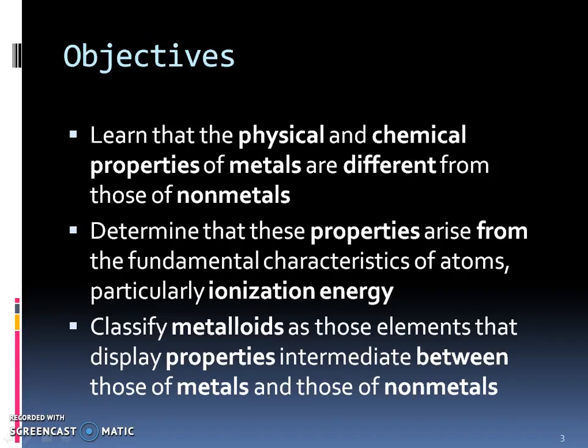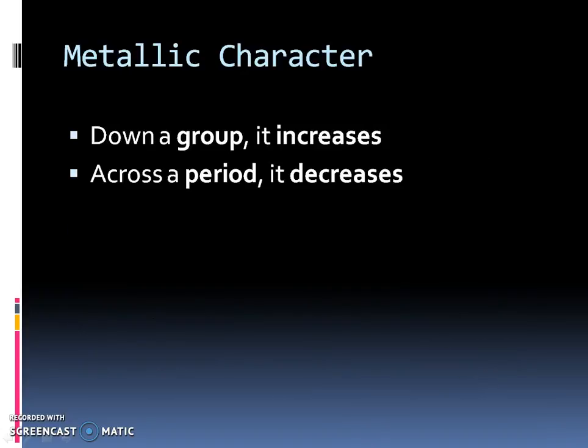By the end of this section, you'll be able to understand the physical and chemical properties of metals and how they are different from nonmetals. Determine that these properties come from the characteristic of ionization energy, and be able to understand that metalloids are elements that have properties of both metals and nonmetals. Again, pause the video, fill in the blanks, and then play to hear my words.